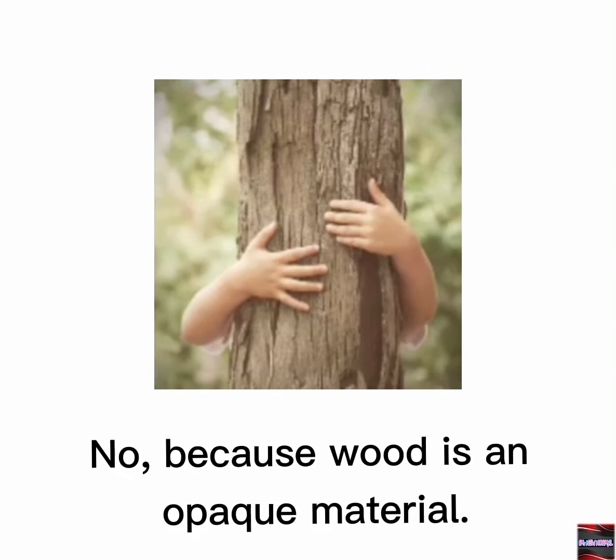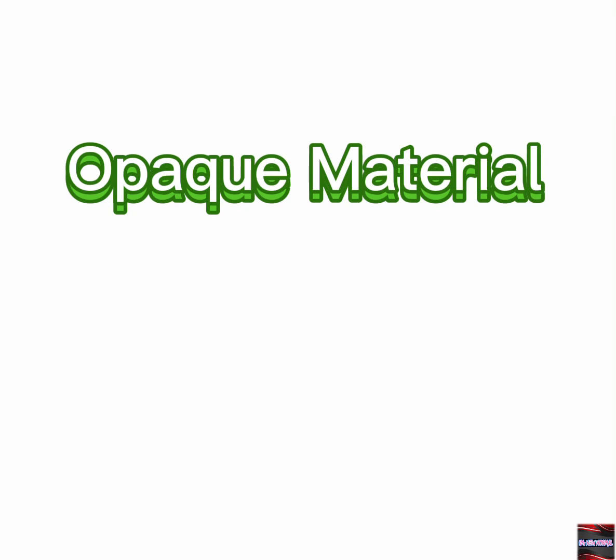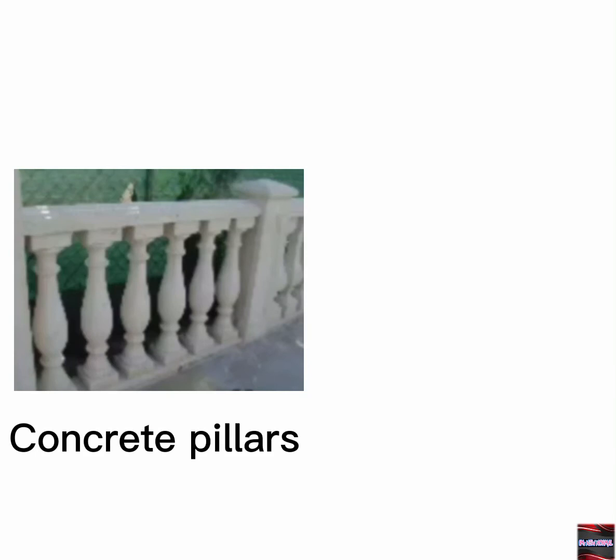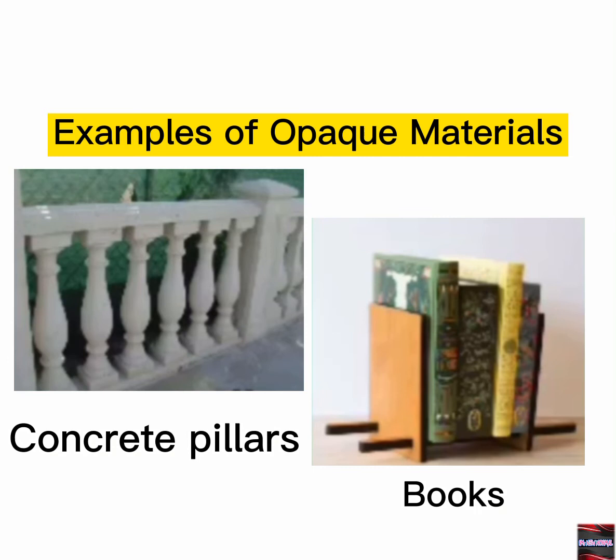Can you see the child behind the wood? No, because wood is an opaque material. Opaque materials are materials that do not allow light to pass through them. Concrete pillars and books are examples of opaque materials.